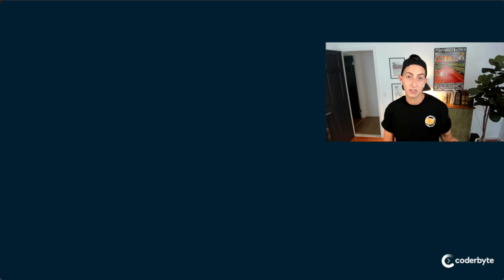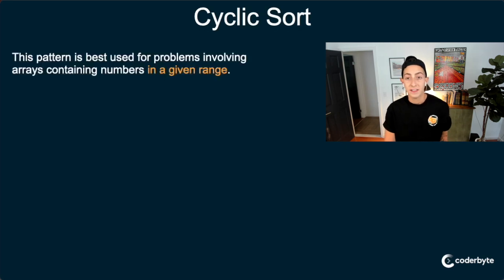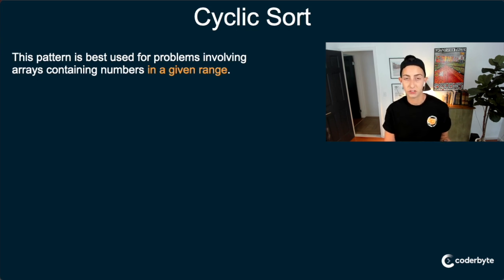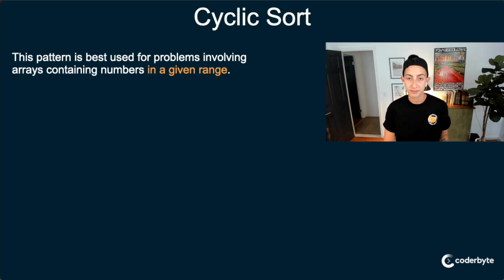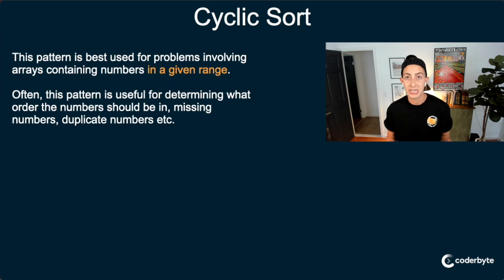Just in case you didn't see the first video in this series all about cyclic sort, let's review what it is. Cyclic sort — this pattern is best used for problems involving arrays containing numbers in a given range. So let's say you have an array with numbers 1 to n or 0 to n, something like that. Often this pattern is useful for determining what order the numbers should be in, if there are missing numbers, if there are duplicate numbers, that sort of thing.